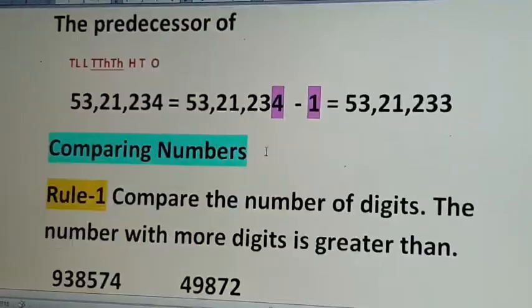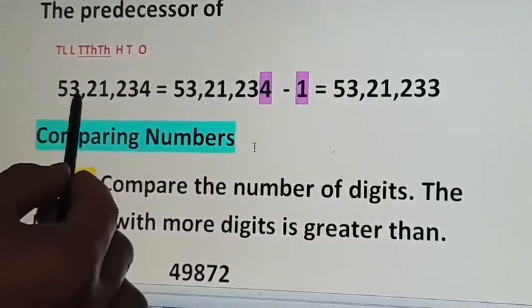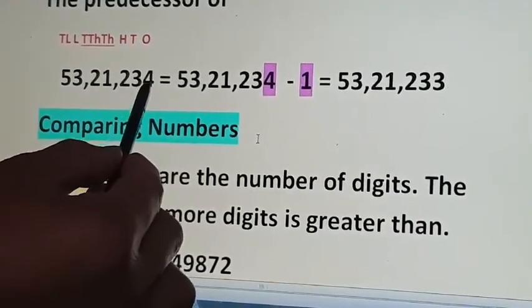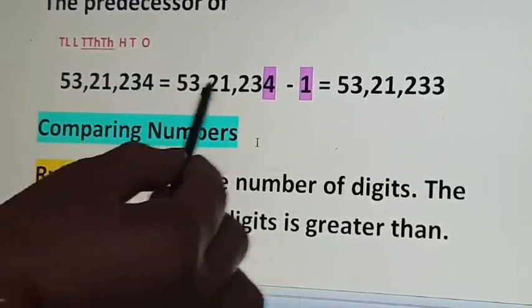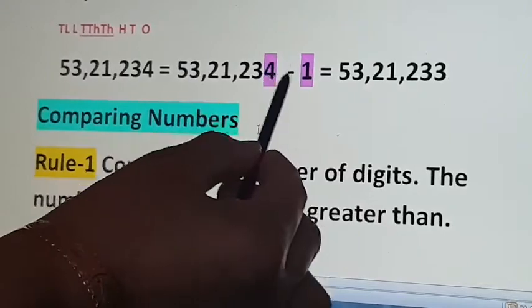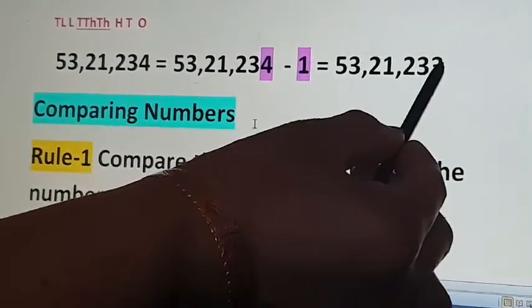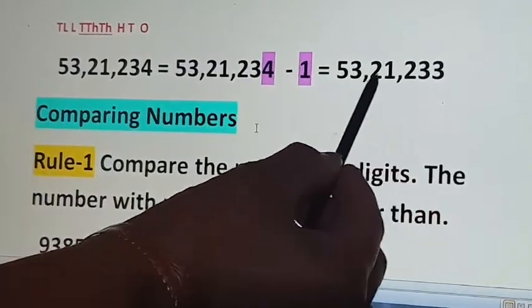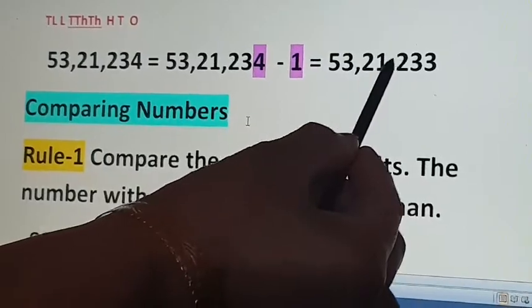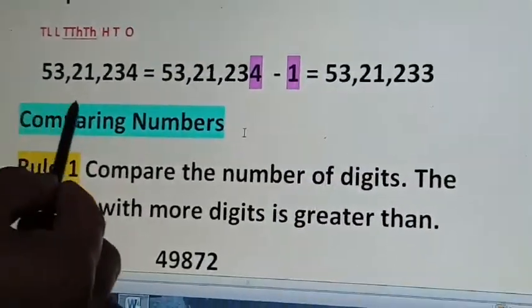Take one example from your book. The predecessor of this number, 53,21,234. To get the predecessor, subtract minus 1. Do it horizontally — start from the ones place. 4 minus 1 is 3, no borrowing, so the rest of the digits will be the same. So 53,21,233 is the predecessor of this number.